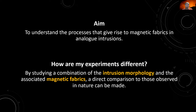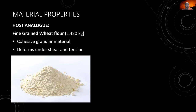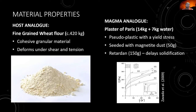The materials used include fine-grain wheat flour — about 420 kilos per experiment, though most is reusable — which is a cohesive granular material that deforms through shear and tension. The magma analog is plaster of Paris, with a mix of about 14 kilos of plaster to seven kilos of water, making a pseudoplastic fluid with a yield stress. It is seeded with magnetite dust, and a retardant is added which delays solidification from about half an hour up to several hours, ensuring all solidification is post-emplacement.